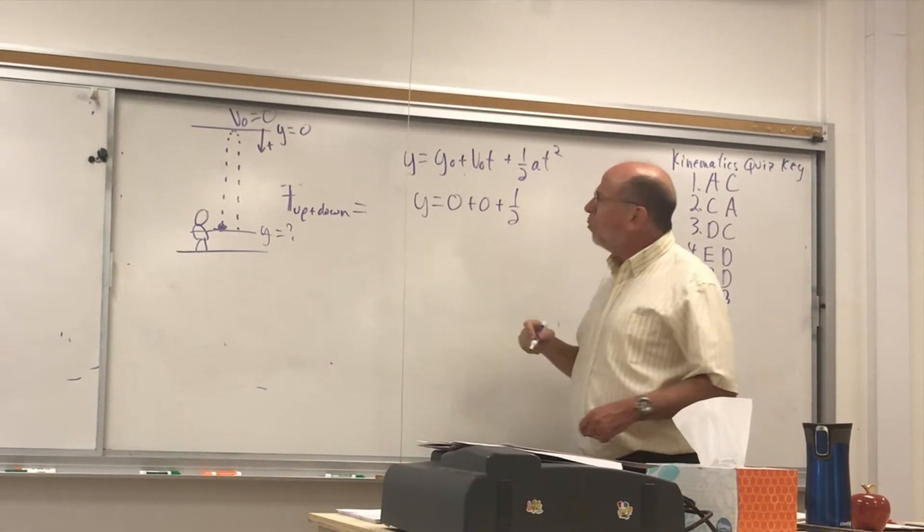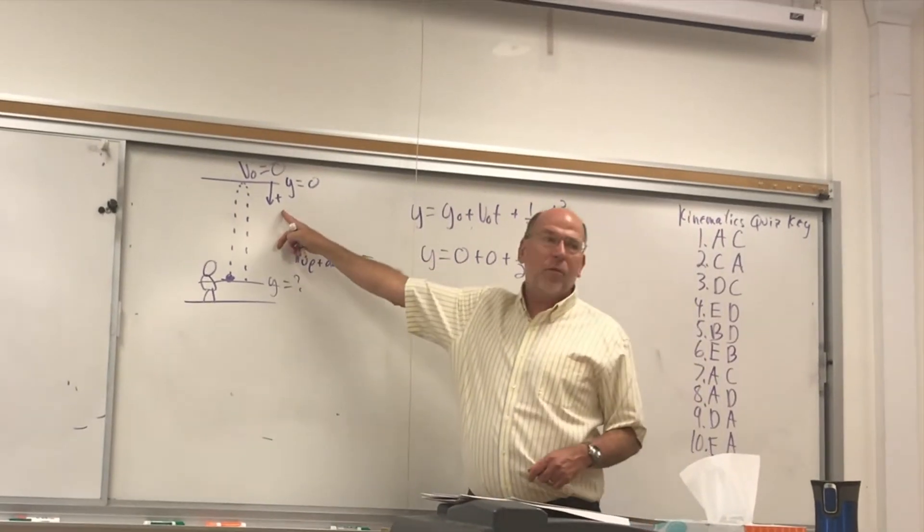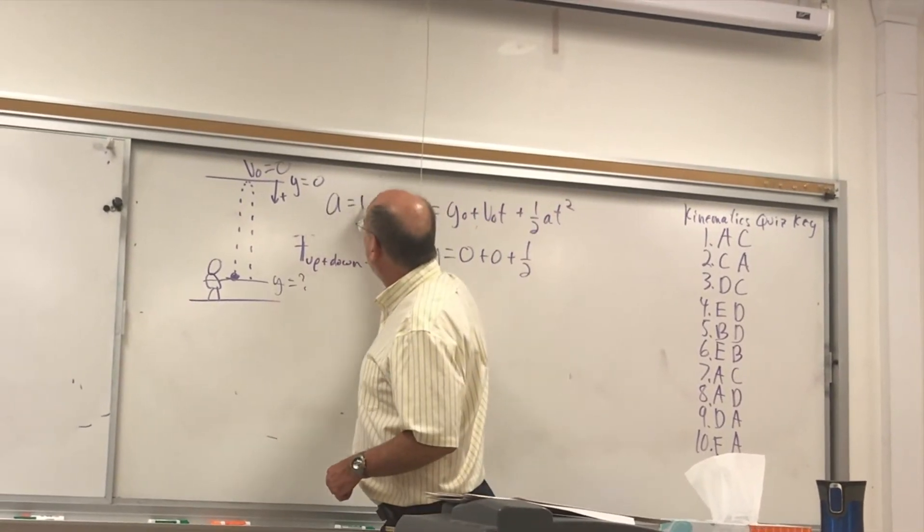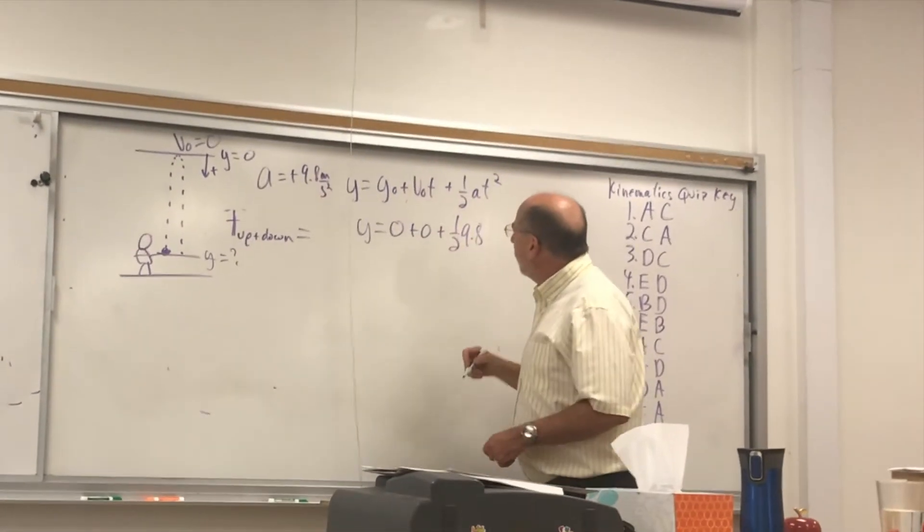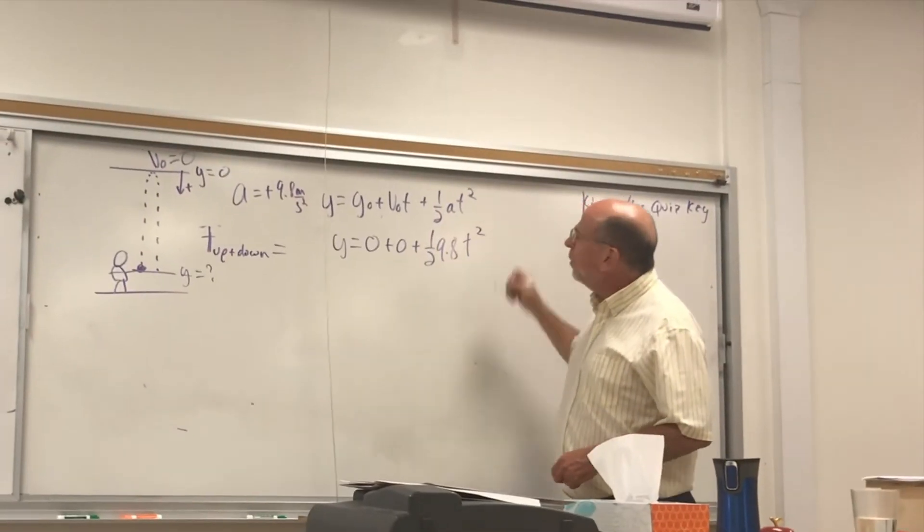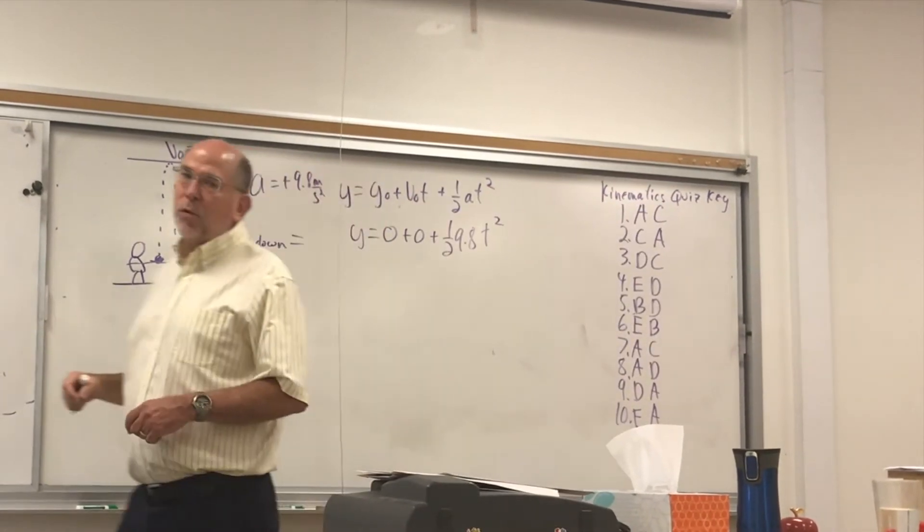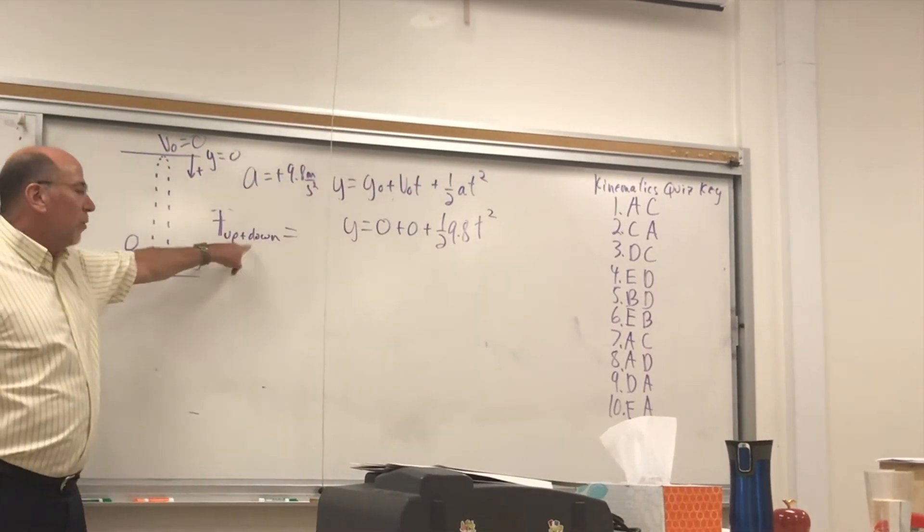One half. What would I put in for A if I made down positive? Positive 9.8. Positive 9.8, right? I just said 9.8. That's what I meant. And then we'd have the time squared. But here's where I might make a mistake. Would I use this time?